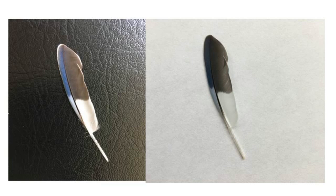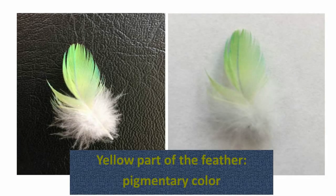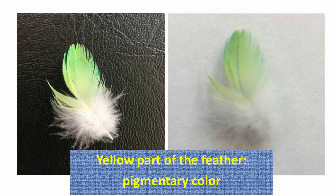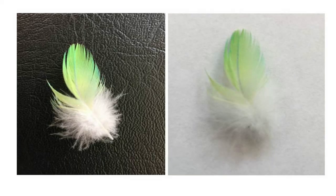Have you noticed the blue part of the same feather gives a different hue when placed on a white paper than on a black leather? The hue of the green and yellow feather barely changes.